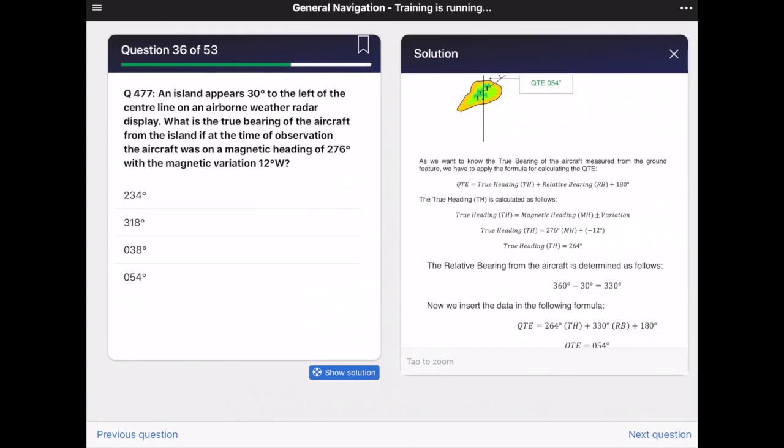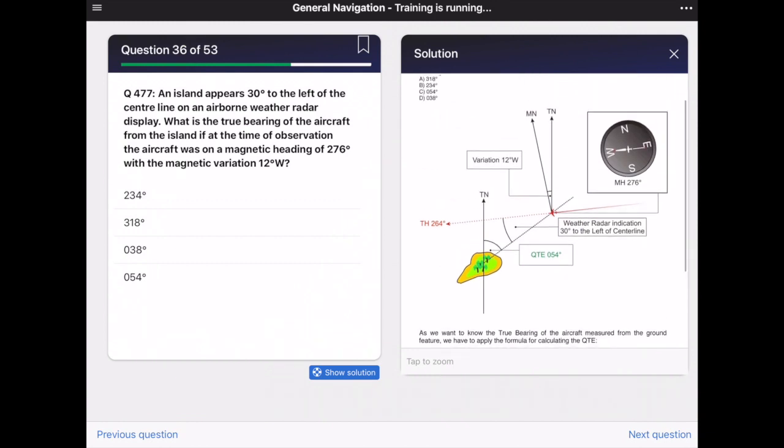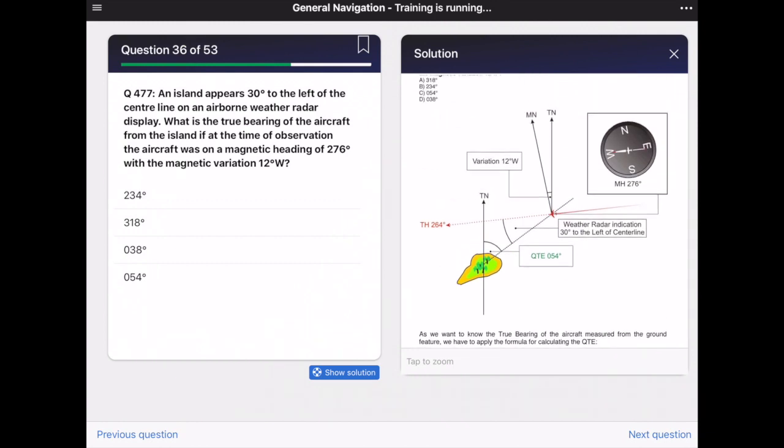And then we just insert the data in the formula from above. This is the QTE which is the true heading plus relative bearing plus 180 degrees. So we have 264 plus 330 degrees plus 180 degrees, gives us a QTE of 054 degrees. Also as shown here on our picture.